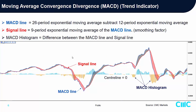So what is MACD? MACD is based on a set of mathematical calculations. Firstly, there is the MACD line — the blue line — which is the difference between the 26-period exponential moving average minus the 12-period exponential moving average. Then it comes up with a signal line — a smoother version, being the 9-period exponential moving average of the MACD line. And the MACD histogram is the difference between the signal line and the MACD line.